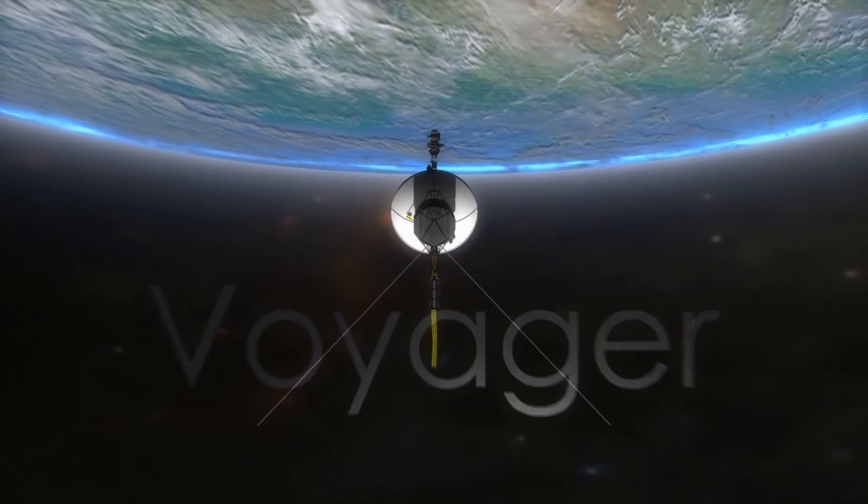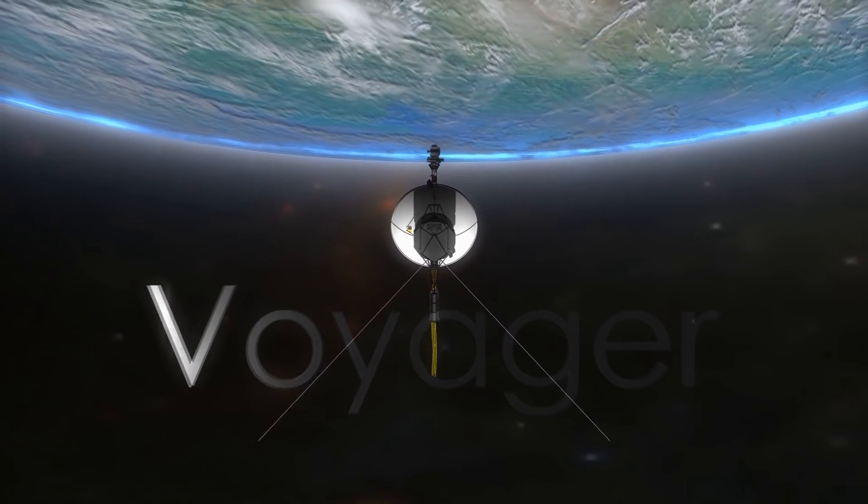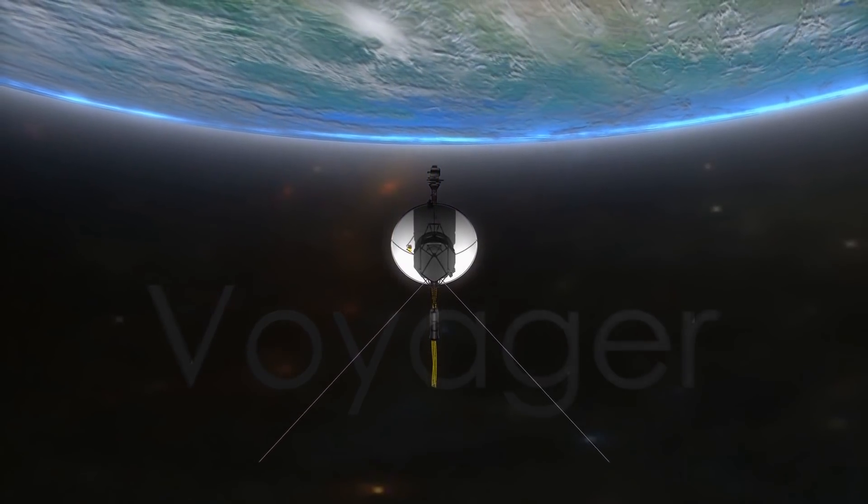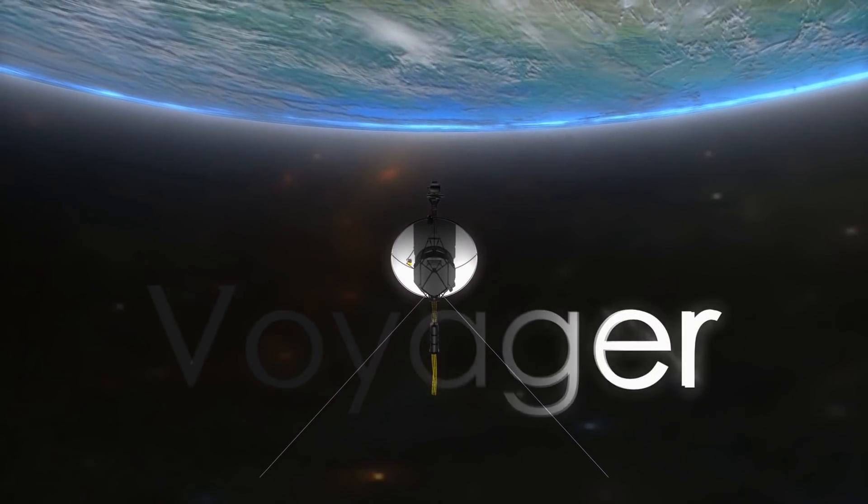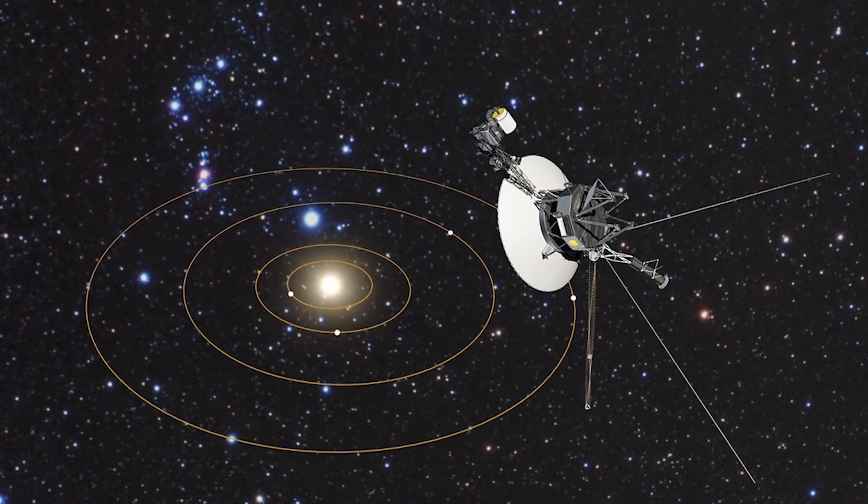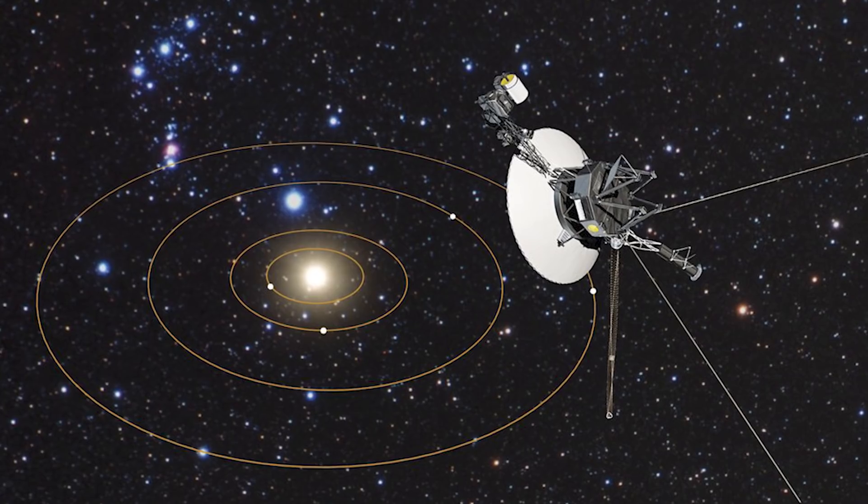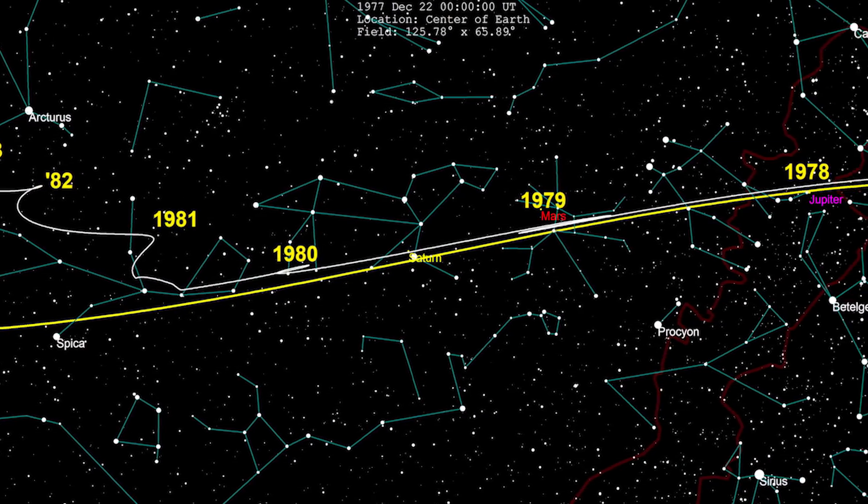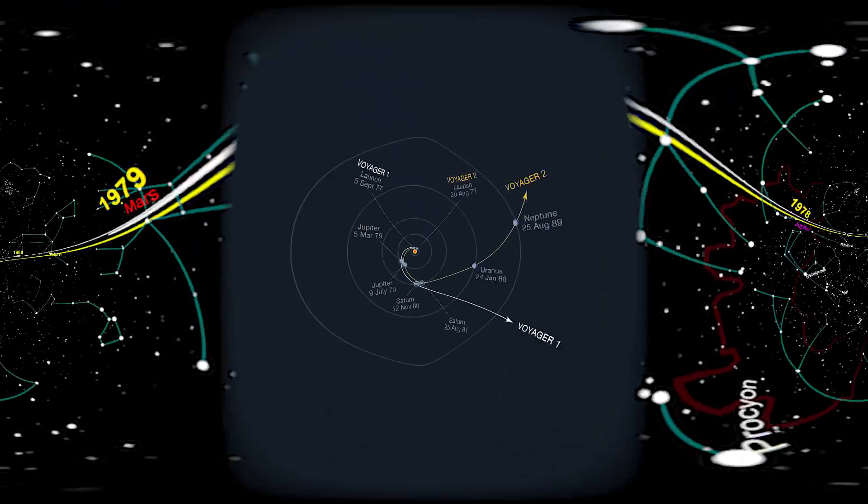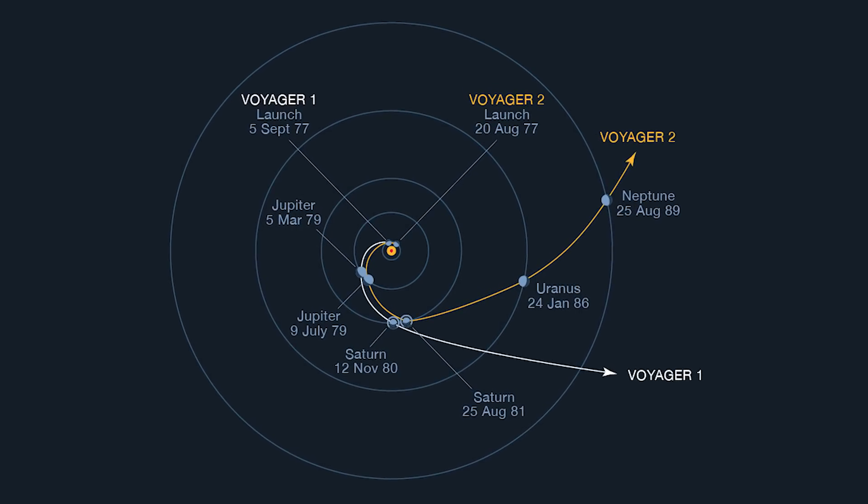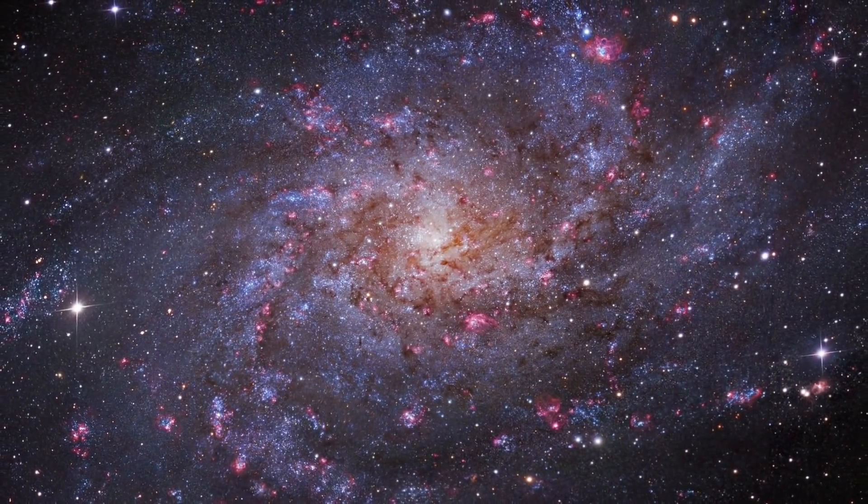But what Voyager 2, backed up by data from Voyager 1, has found is that once they're outside that reach, the plasma that is out in space doesn't go down, it actually goes up in density by a large margin. The marked increase in plasma density is evidence of Voyager 2 journeying from the hot, lower density plasma characteristic of the solar wind to the cool, higher density plasma of interstellar space. It's also similar to the plasma density jump experienced by Voyager 1 when it crossed into interstellar space.